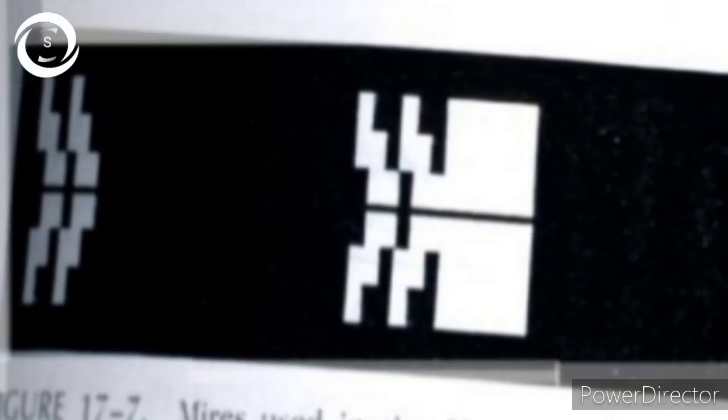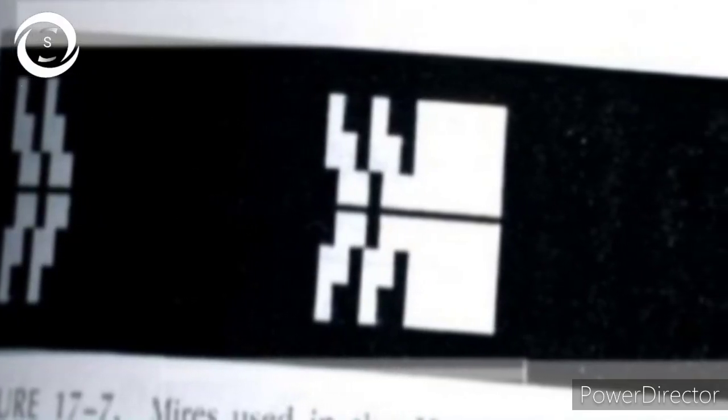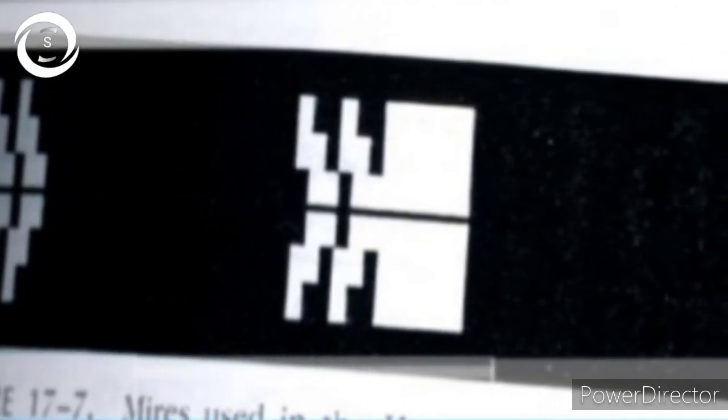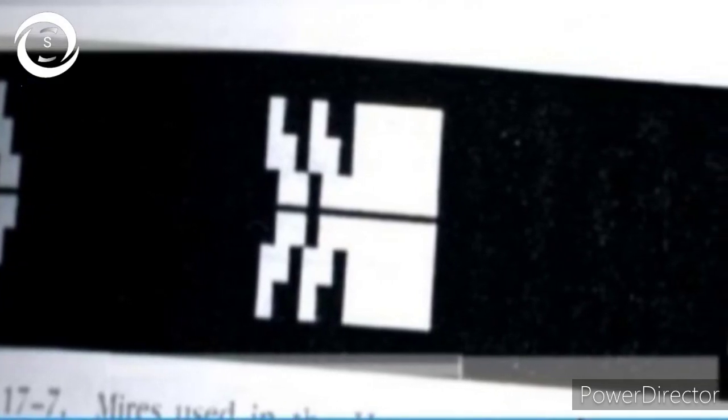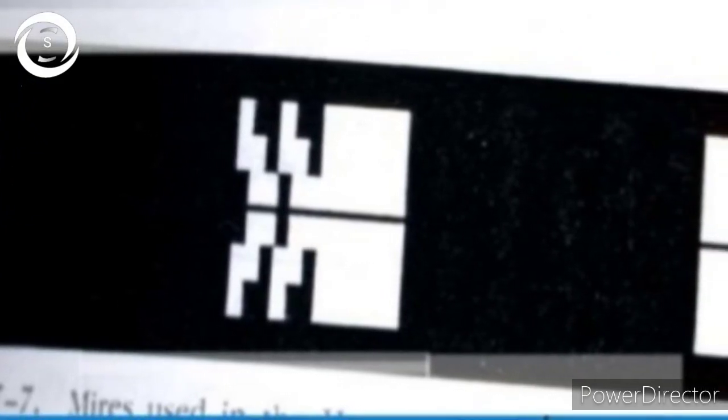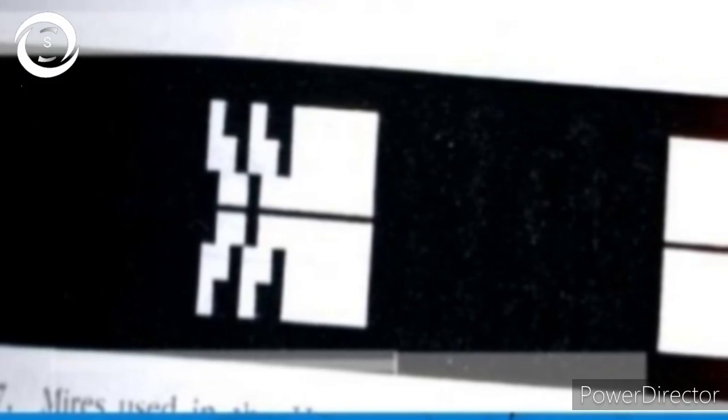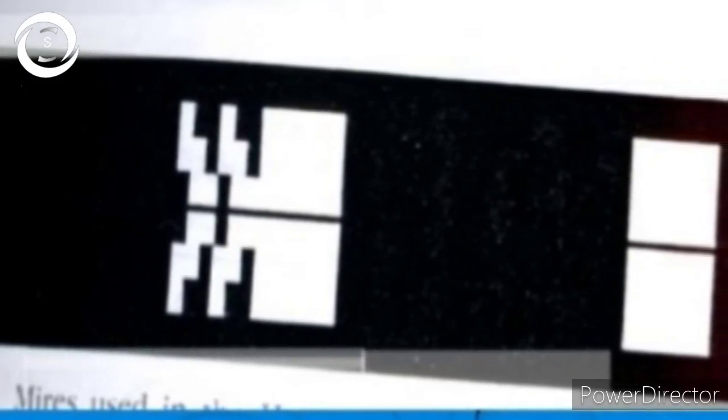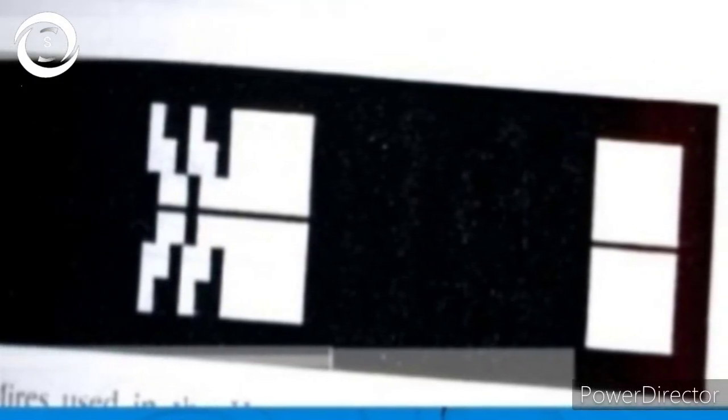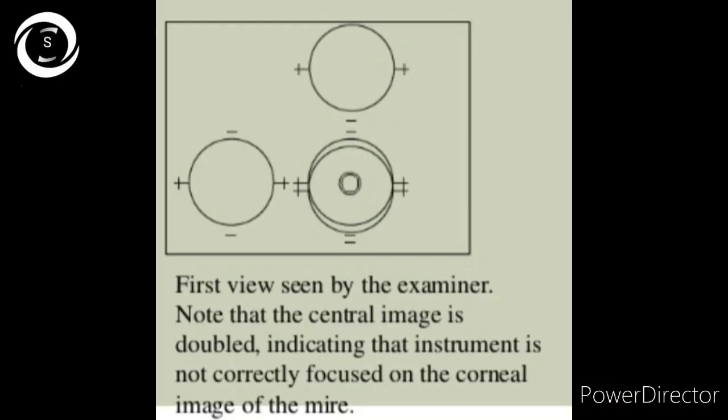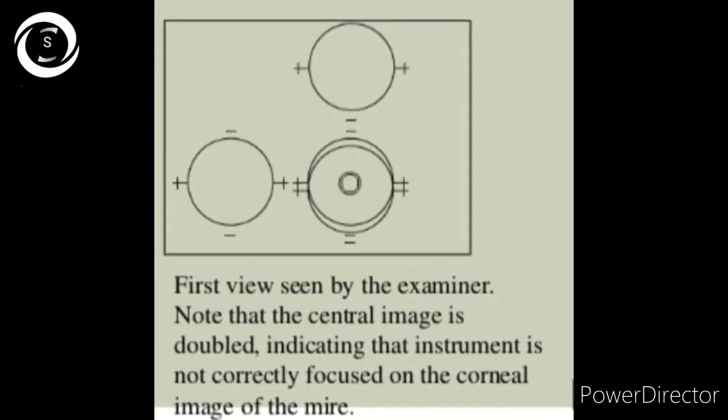Whereas in Javal-Schiotz, we have to obtain readings of both meridians separately. We have manual keratometers like Javal-Schiotz and Bausch and Lomb, as well as auto keratometers that are standalone or incorporated in other topographic machines.